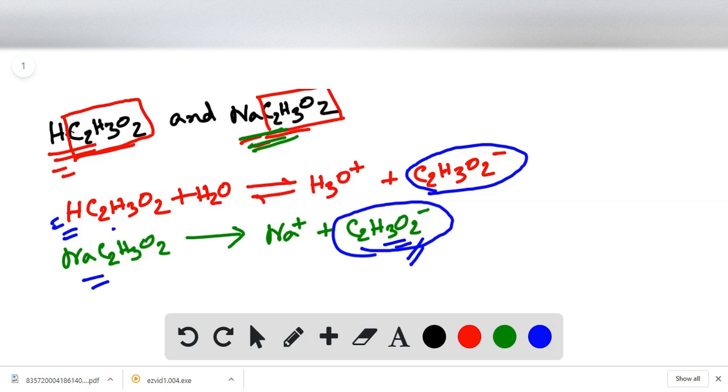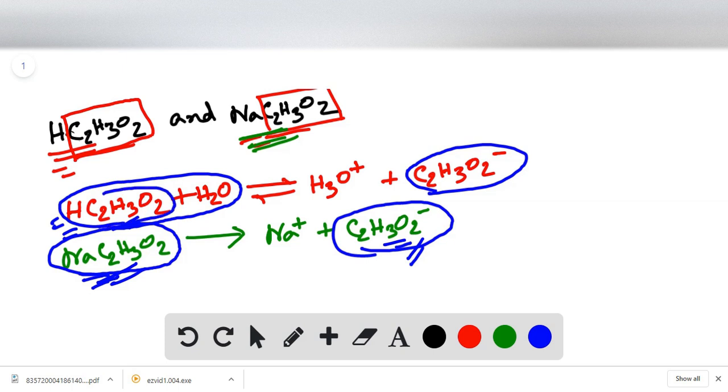We will have a lesser dissociation of this acid in presence of this substance or electrolyte. That means the presence of NaC2H3O2 will decrease the dissociation of this acid.